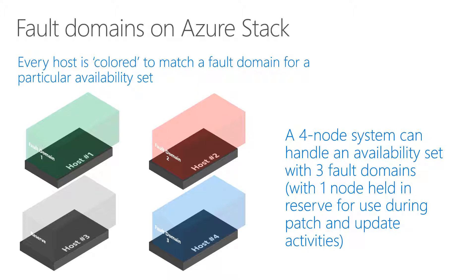Next topic is fault domains. Here's an example where every host is called out to match the fault domain for a particular availability set. In this example we have four nodes, and these four nodes can handle an availability set with three fault domains. We have fault domain one, two, and three. The reason we cannot have four fault domains is that in a four-node system, the fourth node is our reserve node — we need it for patch and update, FRO, or other operations.